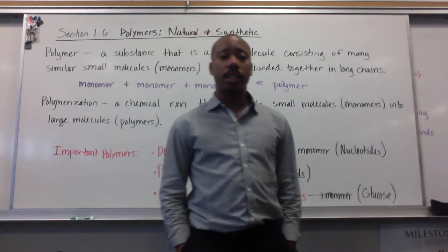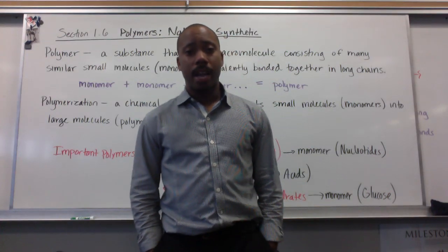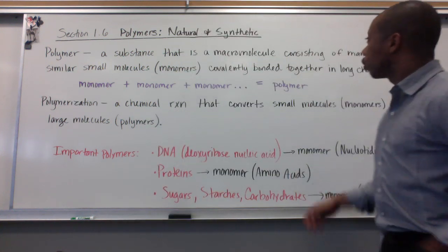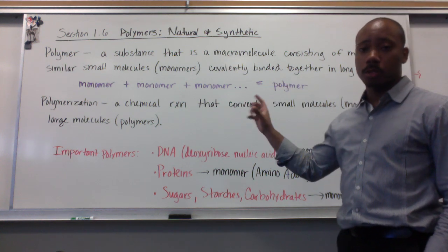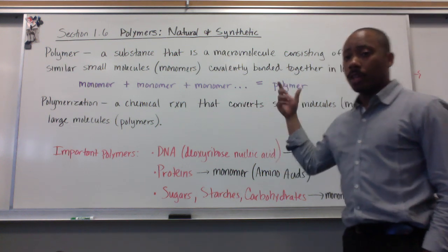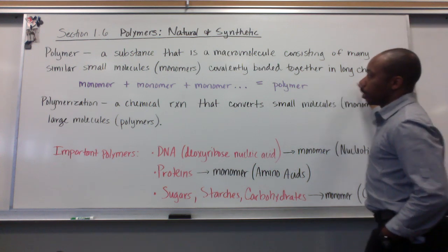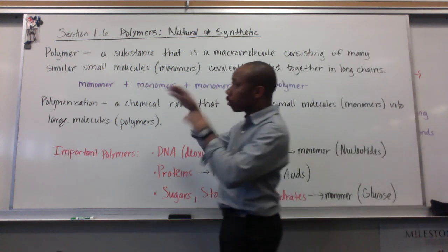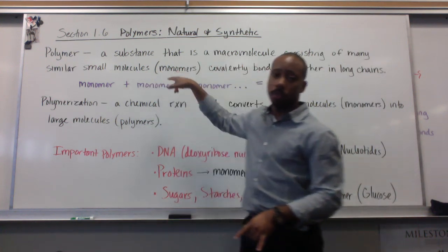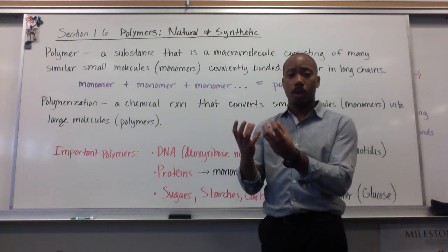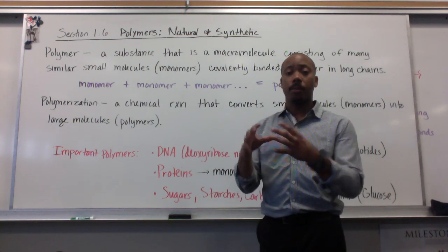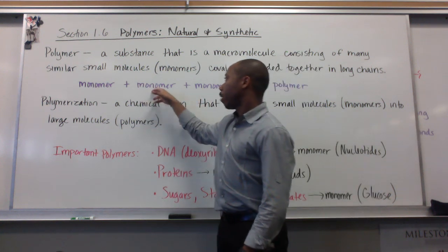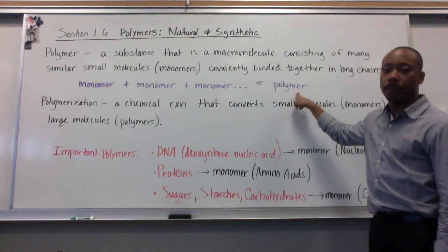Hello, gents. Welcome to Section 6 on polymers, natural and synthetic types. A polymer is a substance that is a macromolecule consisting of many similar small molecules called monomers. They're covalently bonded together in very long chains. Macro just means big — molecules that are really big. They're made out of smaller molecules called monomers, which is a general term for small molecules that stack together to make long chains called polymers. Monomer plus monomer plus monomer will eventually get you to a polymer.